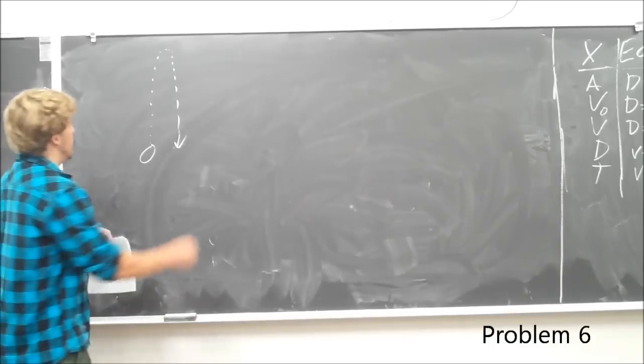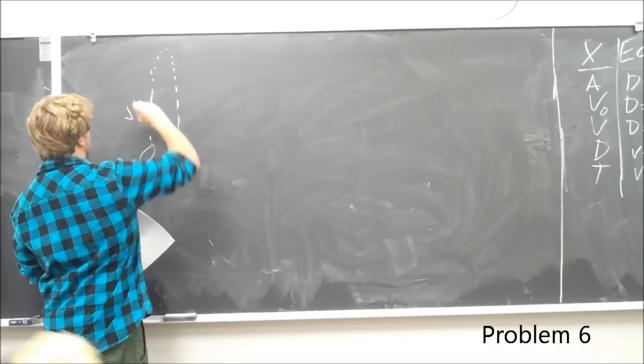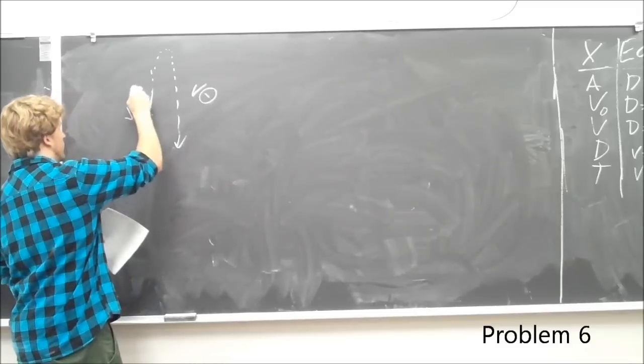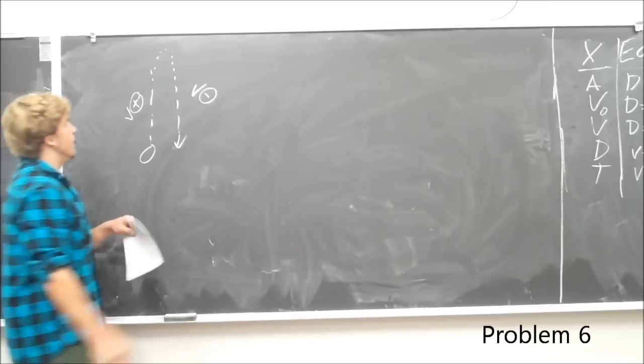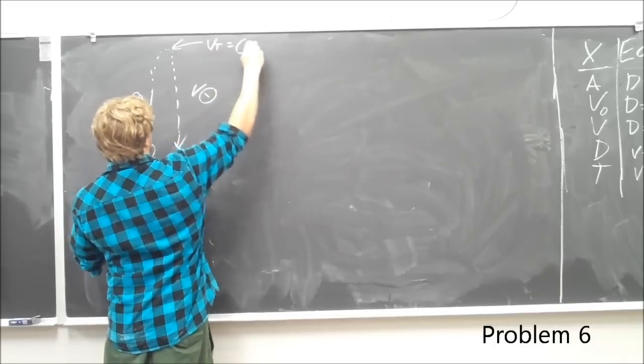So its velocity initially is positive, its velocity down here is negative, right? And the velocity at the top is zero.